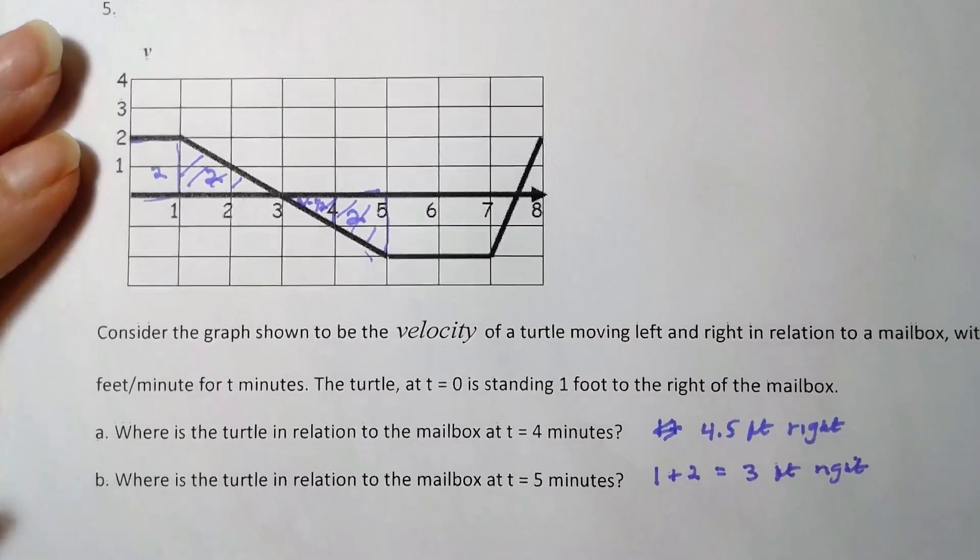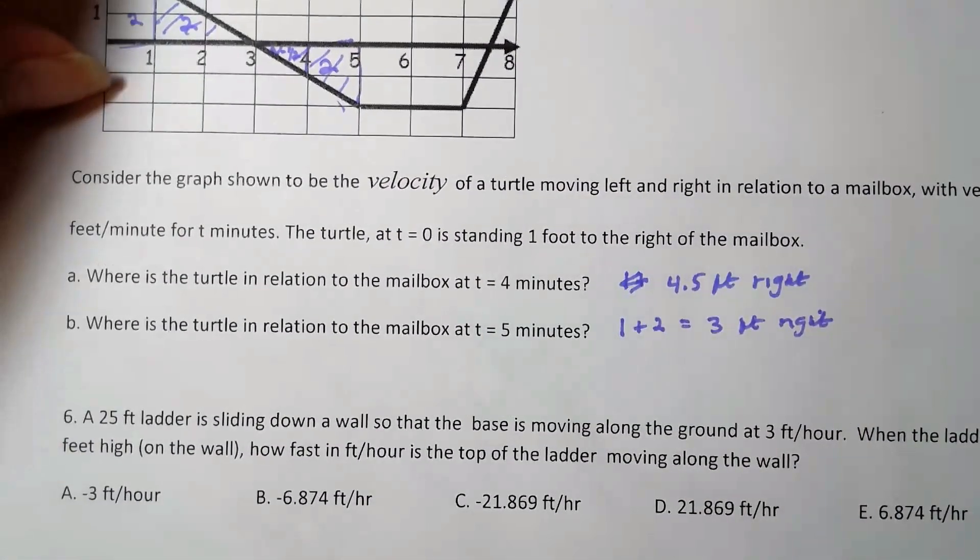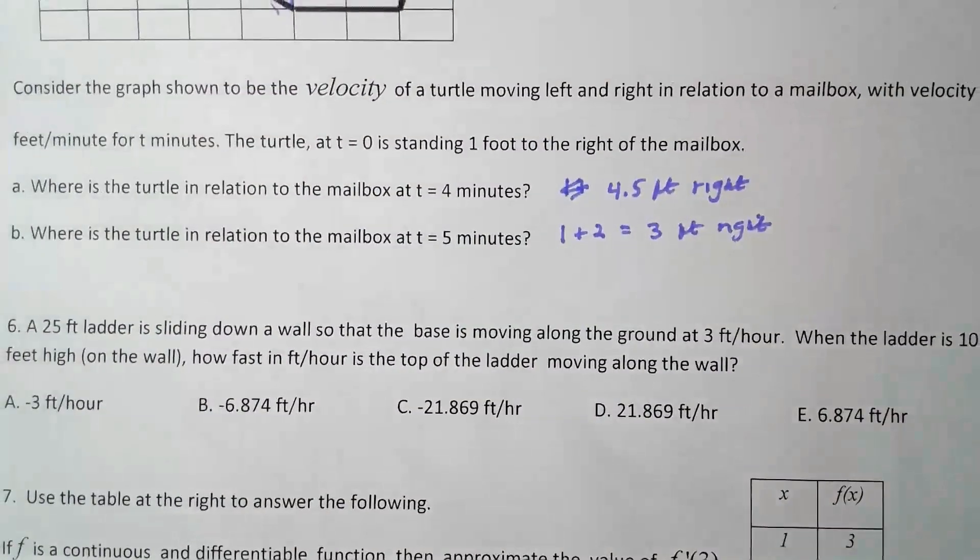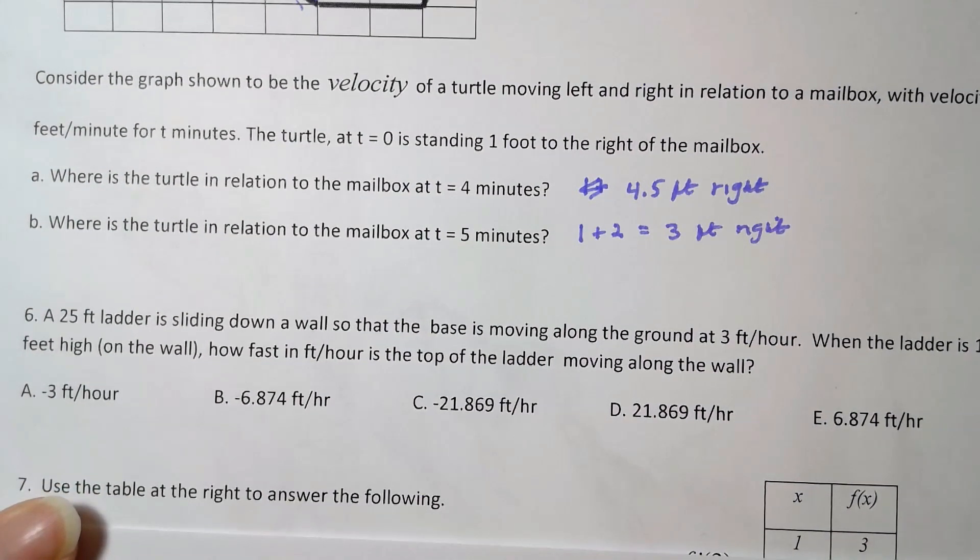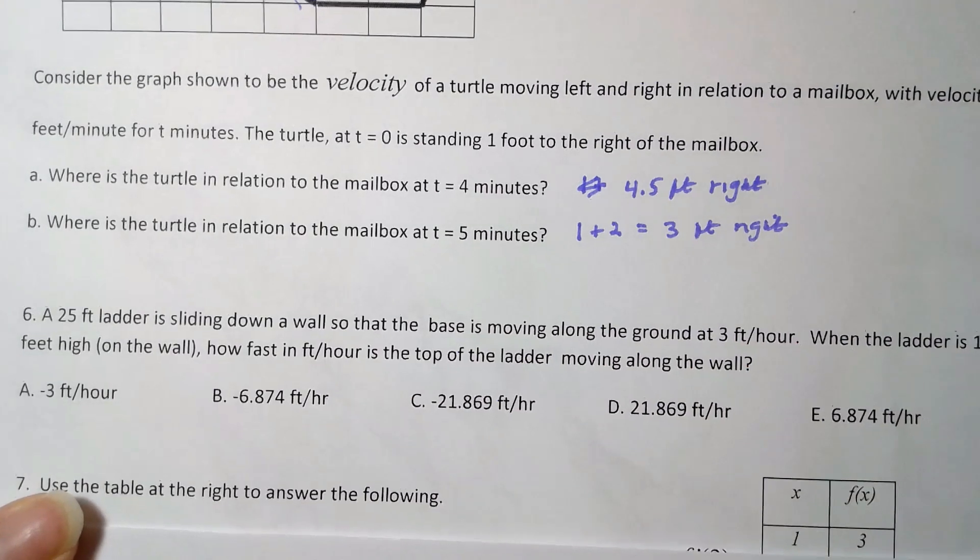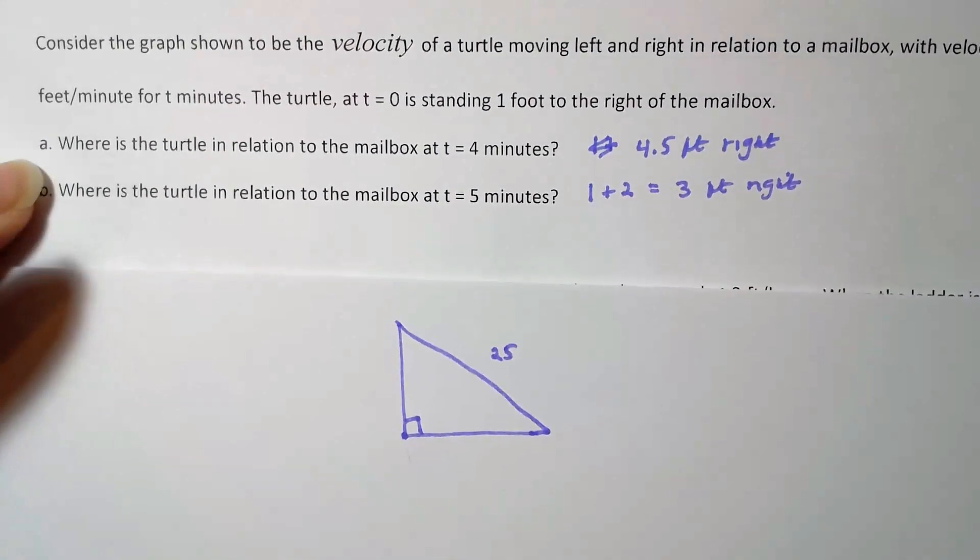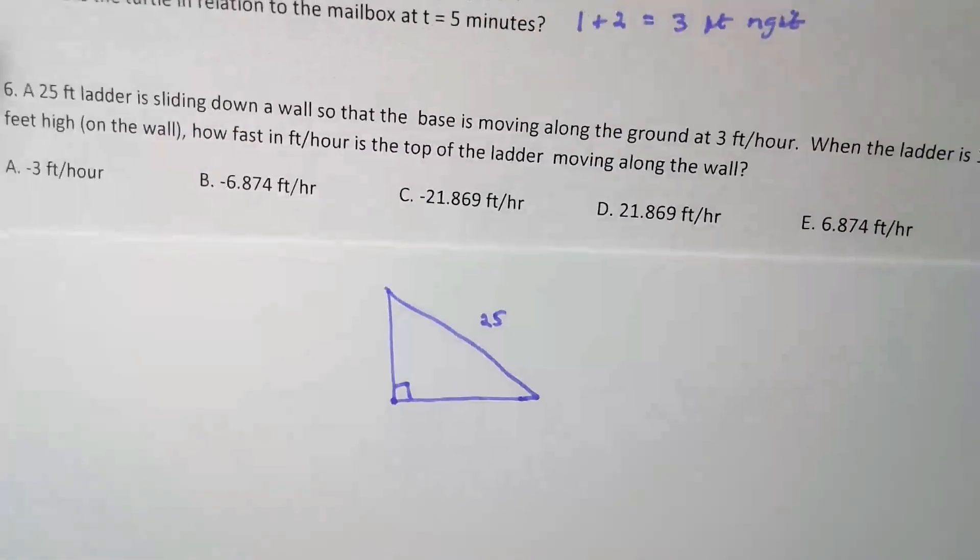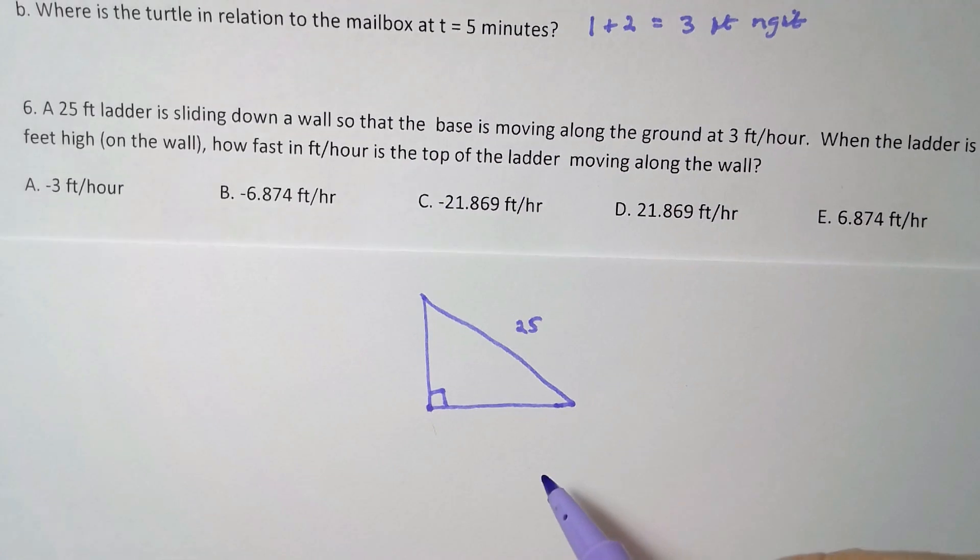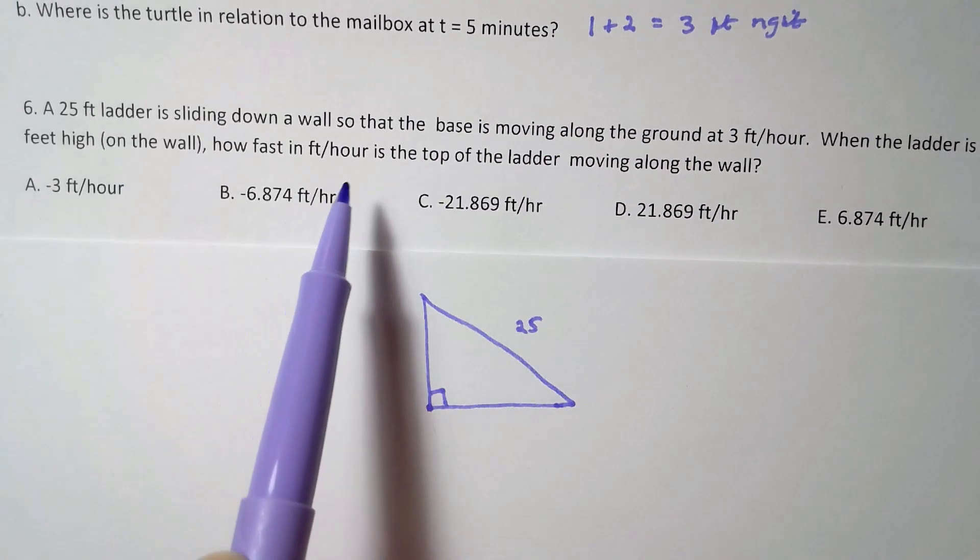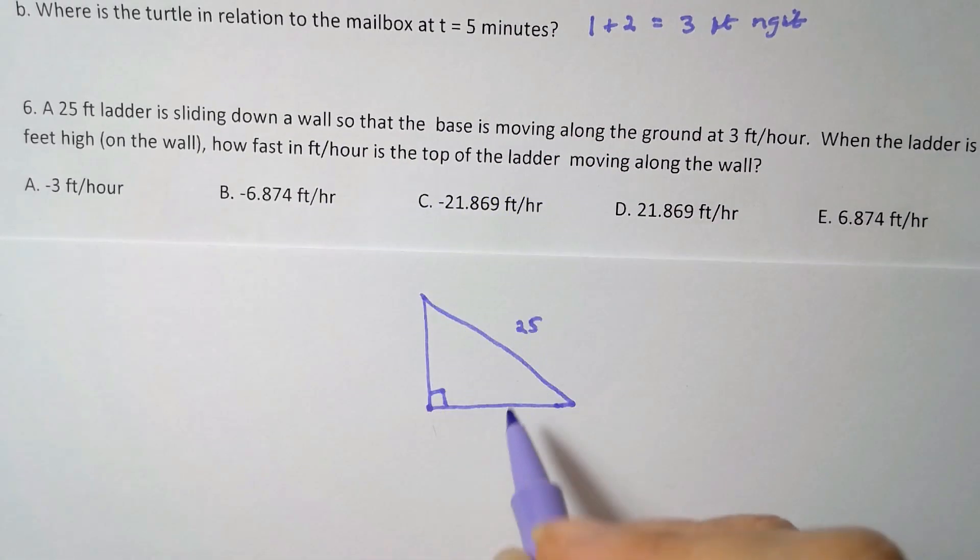Alright, now we have problem six. Okay, so we have a 25-foot ladder sliding down a wall, so I'm just making my triangle. I know it's going to be a right triangle. Here's my ladder, it's 25 feet long, and that length is not going to change.